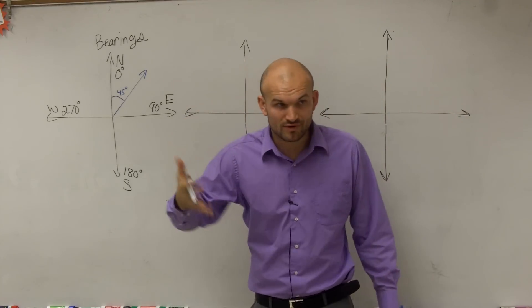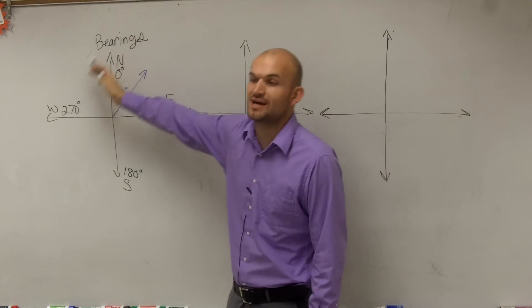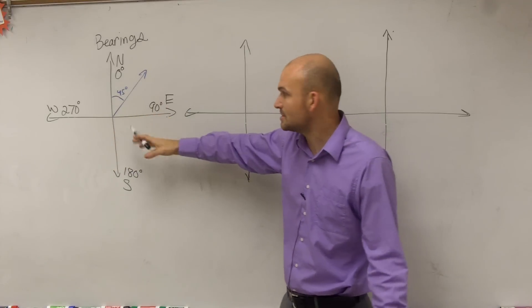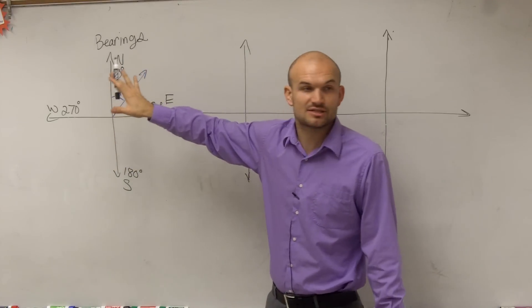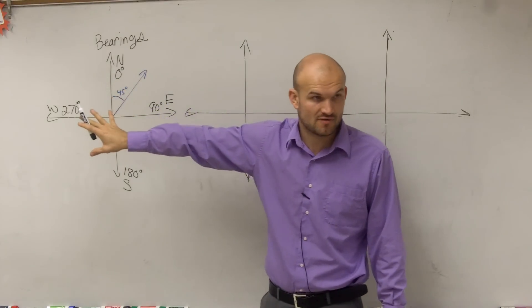Because remember, in what we've previously done, we always had this be our initial side, and we always went counterclockwise. That was to just graph our angles. But now when we're talking about bearings and directions, this is going to be our standard form. This is what we're going to base off of.